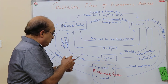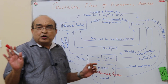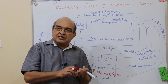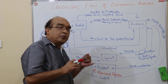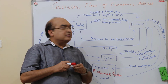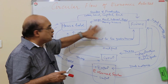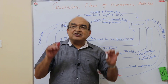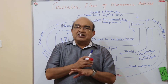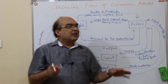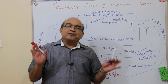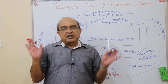It is now a four-sector model: the household sector, the producing sector which includes firms, the government sector, and the external sector. The only thing not shown here are the various financial institutions that mediate between these entities. This is how the circular flow of economic activity is organized. Thank you very much.